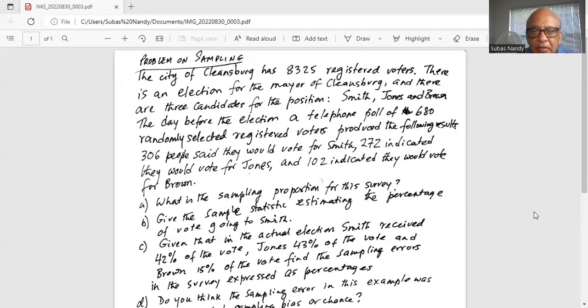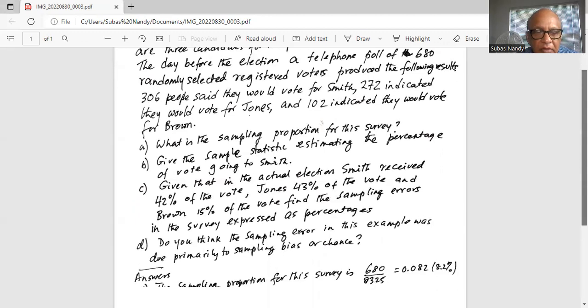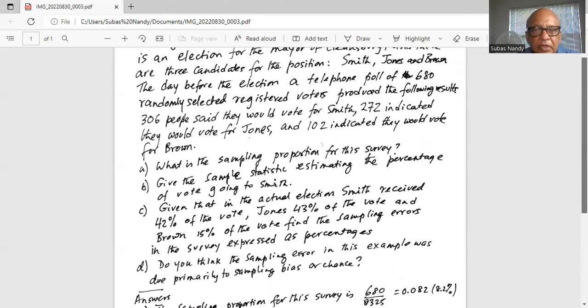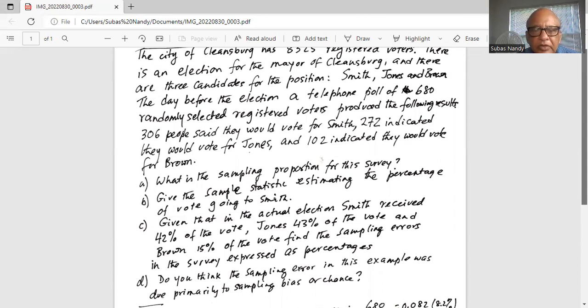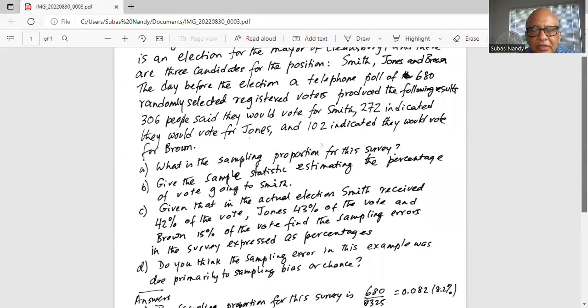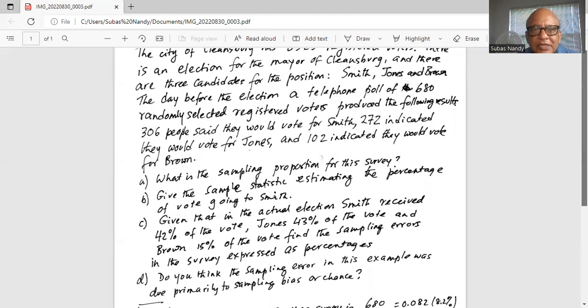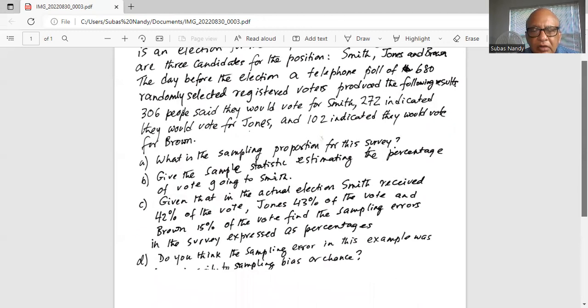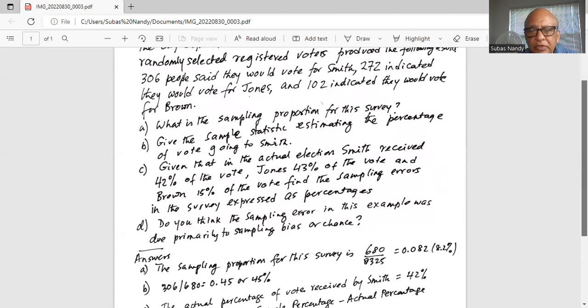What is the sampling proportion for this survey? The sampling proportion for this survey—remember they have taken a random sample the day before the election, a telephone poll of 680 randomly selected registered voters. So 680 is the sample size divided by the population of 8,325. The sampling proportion for this survey is 0.082 or 8.2 percent.